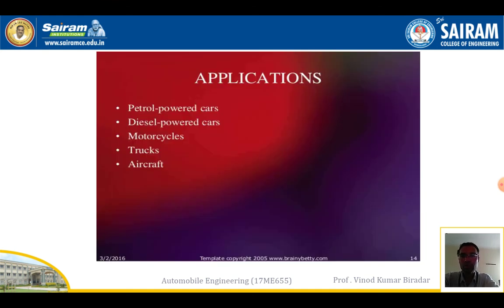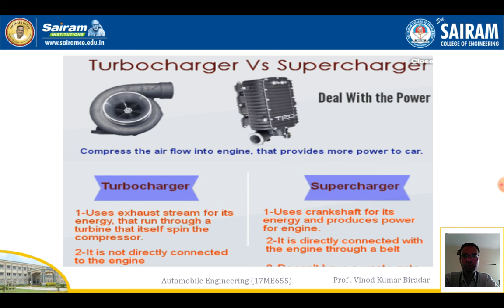Applications include petrol cars, diesel cars, motorcycles, trucks, and aircraft. The main difference between turbocharger and supercharger: the turbocharger uses extra components — a turbine and compressor — and uses exhaust stream energy running through the turbine to spin the compressor. The supercharger uses the crankshaft for its energy. The turbocharger is not directly connected with the engine, while the supercharger is directly connected through a belt drive to transmit power.